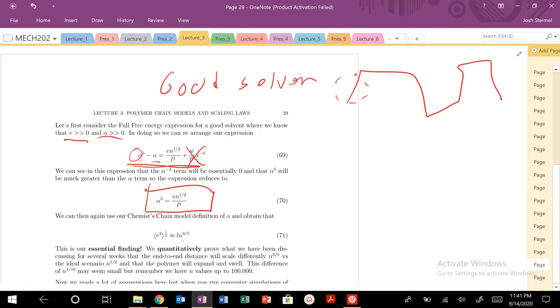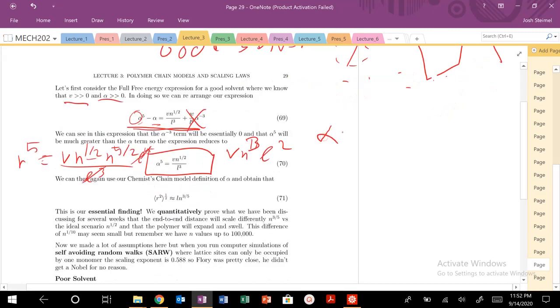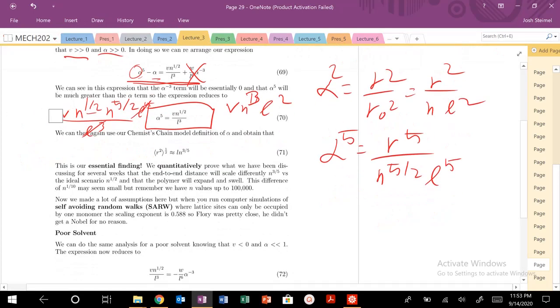So alpha is equal to, or alpha squared is equal to R squared over R naught squared, where that is the length of our ideal chain, so it's just NL squared. So we know that alpha to the fifth is going to be R to the fifth divided by N to the five over two times L to the fifth as well. So, once we plug that in, do some rearranging over here.